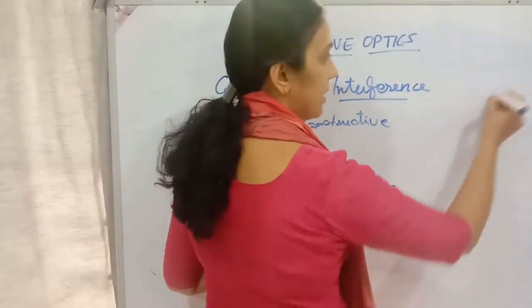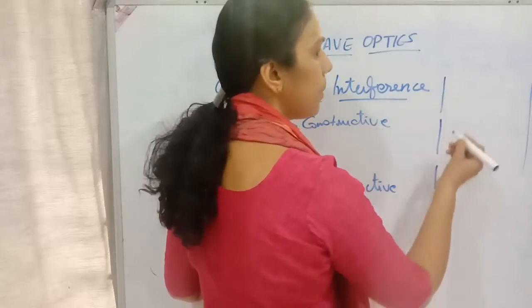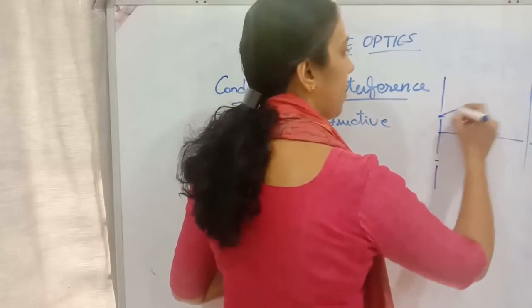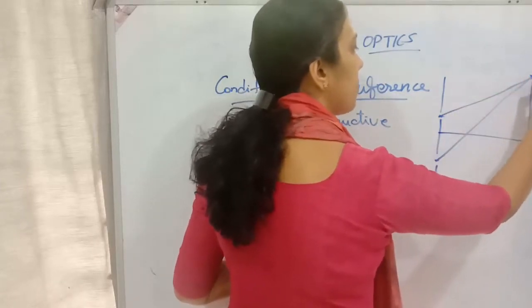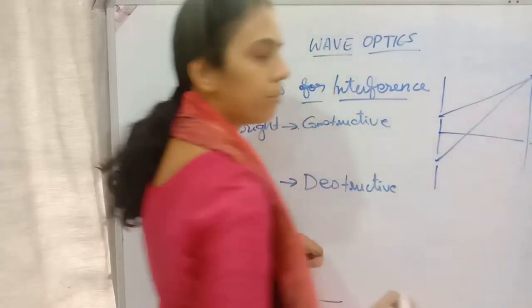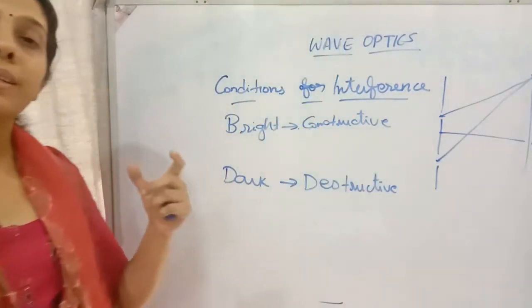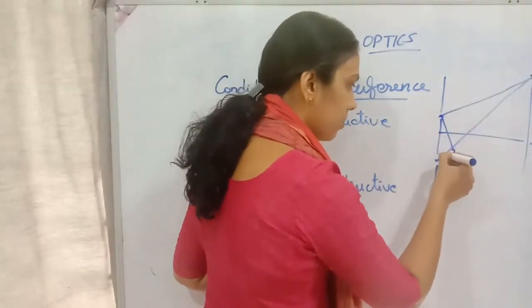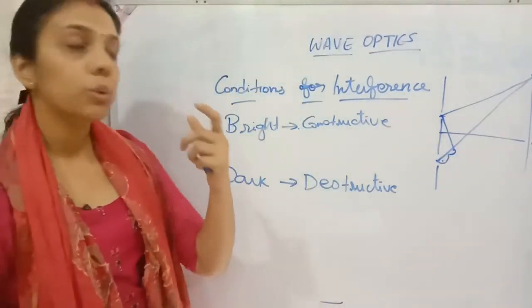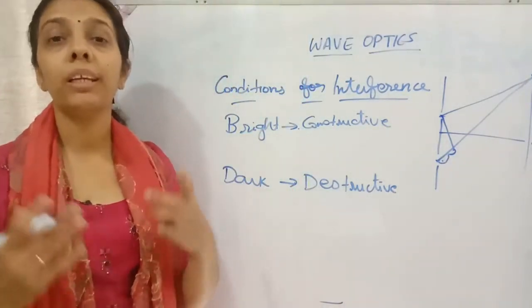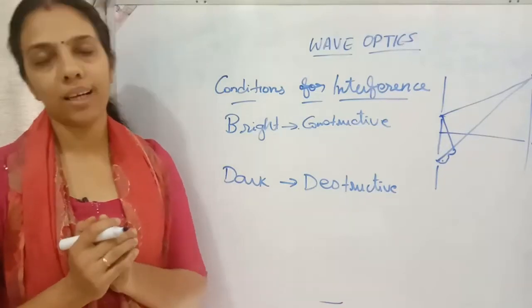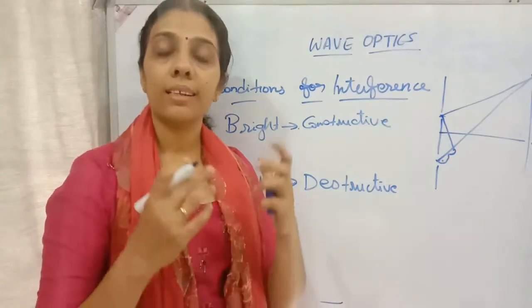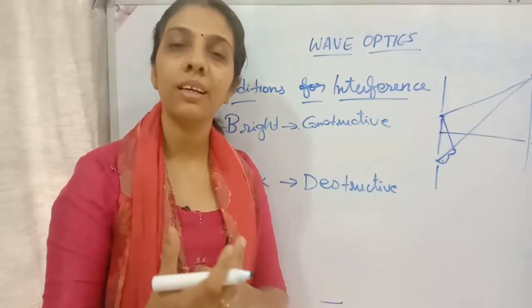From the two slits — these are the two coherent sources of light — light is coming and I am considering a screen. I am considering a point P on the screen. What is the path difference between these two waves? If I drop a perpendicular, that will be the path difference. We need to find the value of that path difference — at which points we get constructive interference and at which points we get destructive interference.